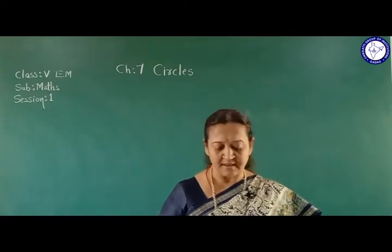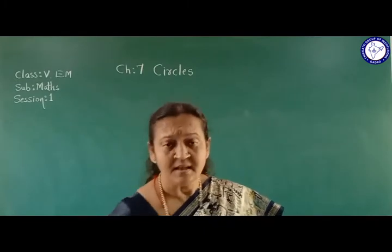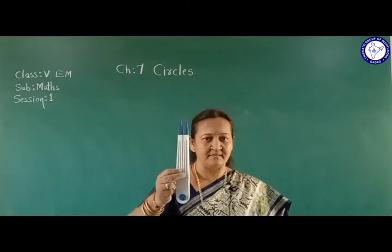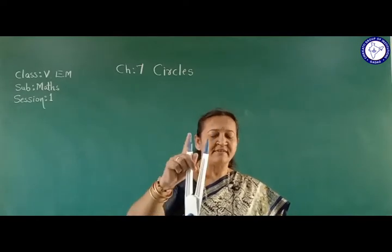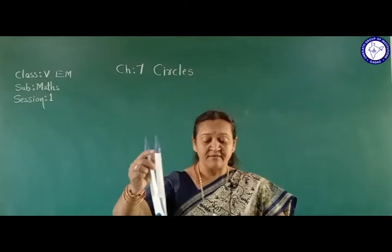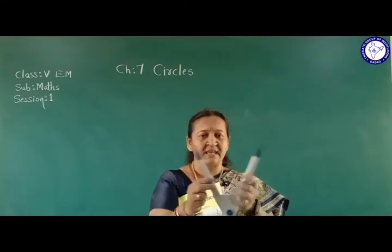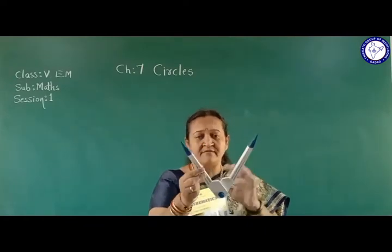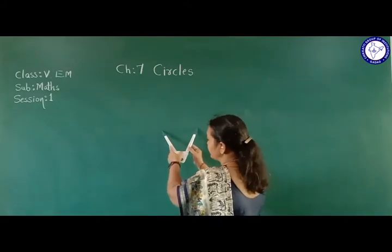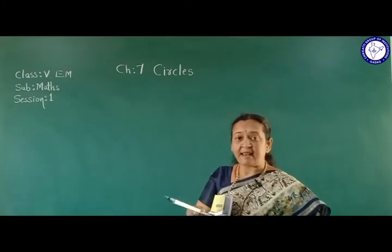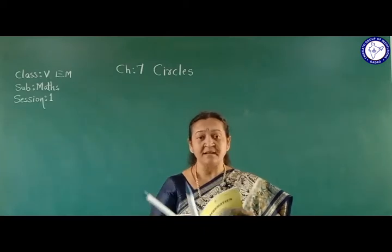Then comes the divider. This instrument is called a divider. On both sides we have pointed ends. We place these pointed ends on a line segment to measure it, then keep it on the scale to get the exact measurement of the line segment.